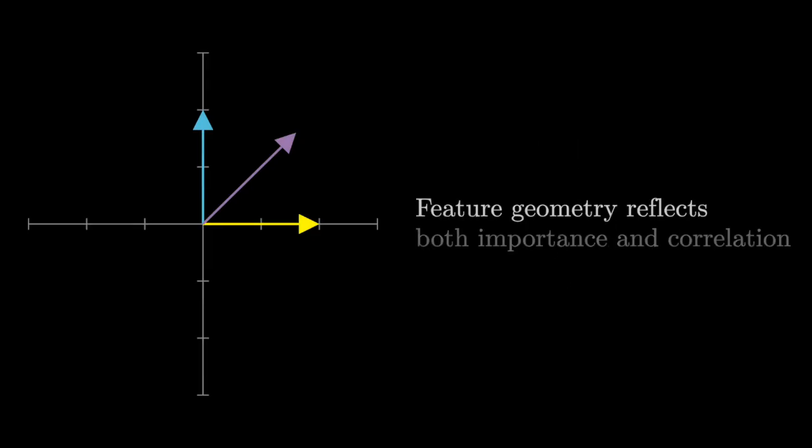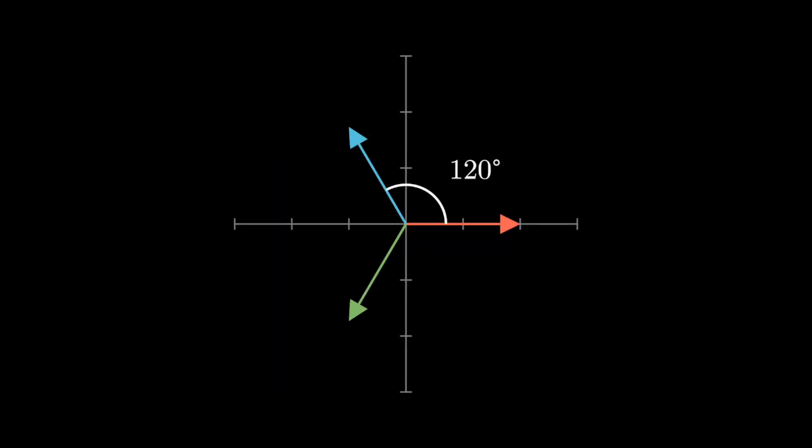The answer is that the model doesn't treat all features equally. It adjusts their geometry based on their importance and correlation patterns. Features that co-occur often get rotated closer to being orthogonal to reduce interference, even if that sacrifices a bit of packing efficiency, while rarely co-occurring features can afford to overlap more with no practical interference.